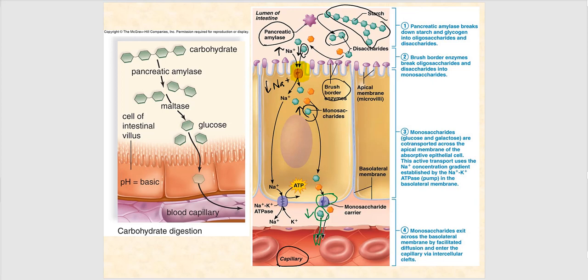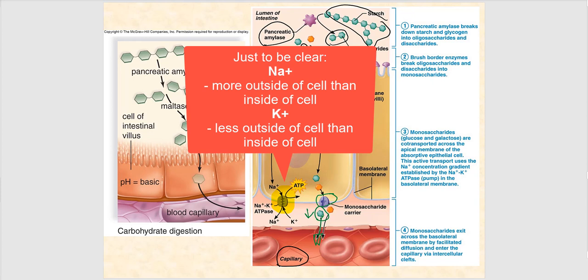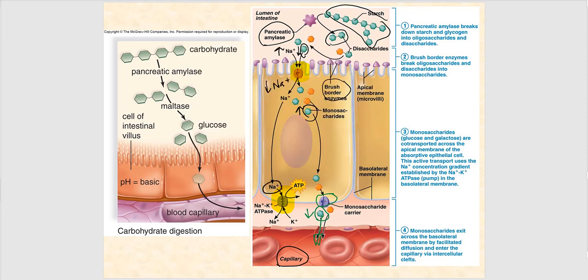Now, what about the sodium-potassium pump? That's classic active transport. We're moving sodium and we're moving potassium. This is not an antiporter. The reason it's not an antiporter, even though we have two substances — sodium and potassium — is because we're moving them both against their concentration gradients. Sodium is going from low to high while potassium is going from low to high. One is leaving the cell and one is entering, but they're both going against their concentration gradient. This is a classic pump — active transport.